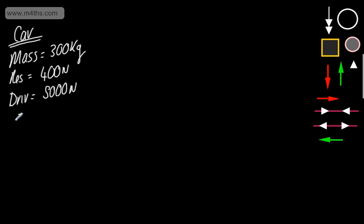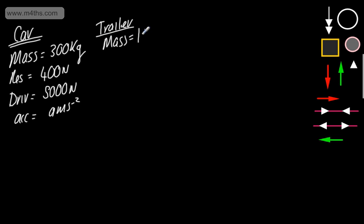The car is accelerating forward at a meters per second squared. This is going to be pulling a trailer, and we're going to say that the trailer is being pulled by a light tow bar. Light means it's going to add negligible mass and we're going to have equal tension in that tow bar. We'll give the trailer a mass of 100 kilograms with resistances to motion of 200 newtons.